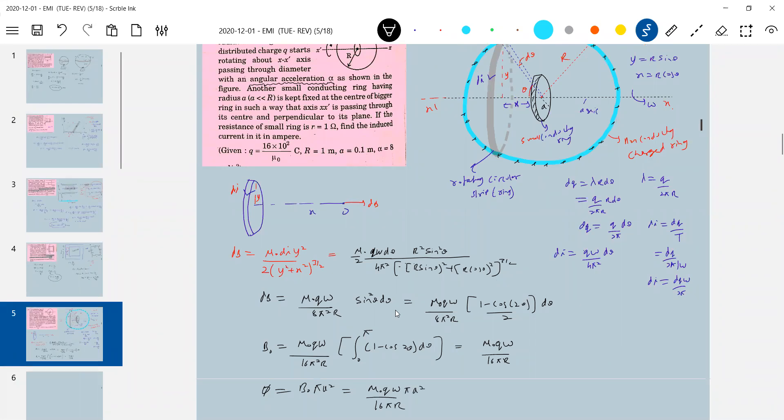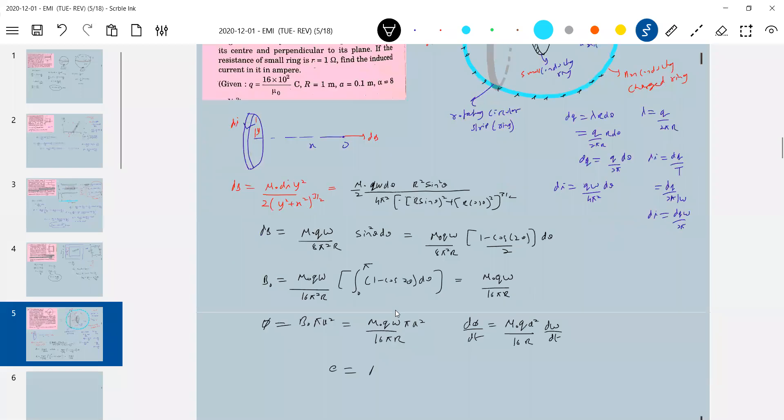This omega, I'll differentiate this. d phi by dt, mu naught q a square 16 r d omega by dt. So this will become e is equal to alpha, eight eight eight, ultra yeah.